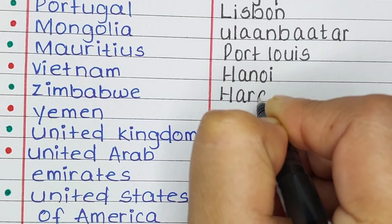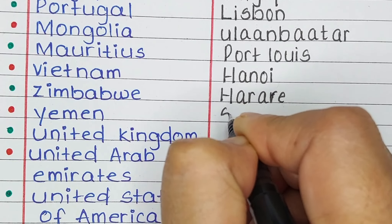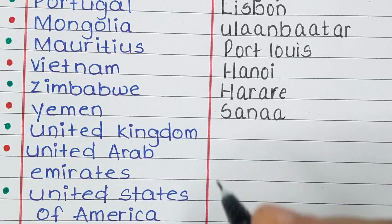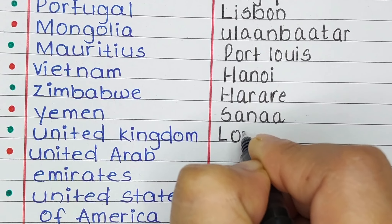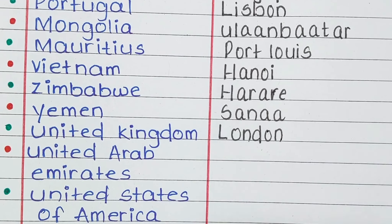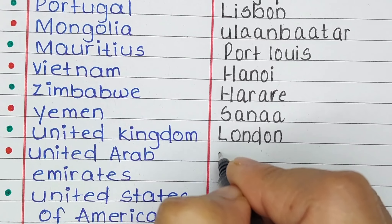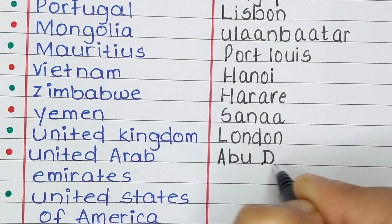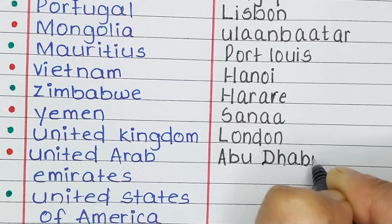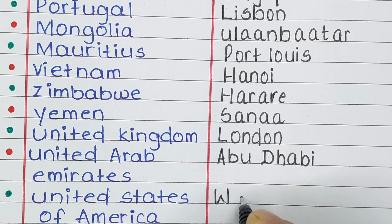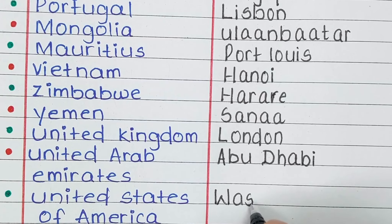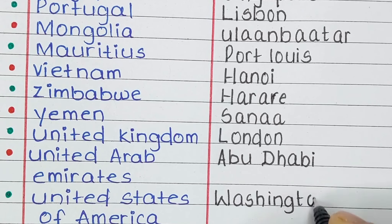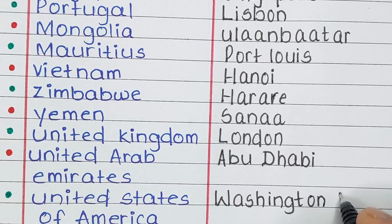Next is Vietnam. The capital of Vietnam is Hanoi. Next is Zimbabwe. The capital of Zimbabwe is Harare. Next is Yemen. Its capital is Sana'a. The next country is United Kingdom. The capital of the United Kingdom is London. Next is United Arab Emirates. Its capital is Abu Dhabi. Next is United States of America. Its capital is Washington D.C.